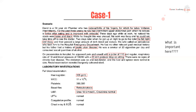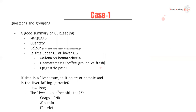LFTs, coags, and chest x-ray are normal. Why do we do a chest x-ray in this case? One of the things we really worry about is a perforation — a perforated peptic ulcer — which can present with a pneumoperitoneum, which would appear as air under the diaphragm on chest x-ray.